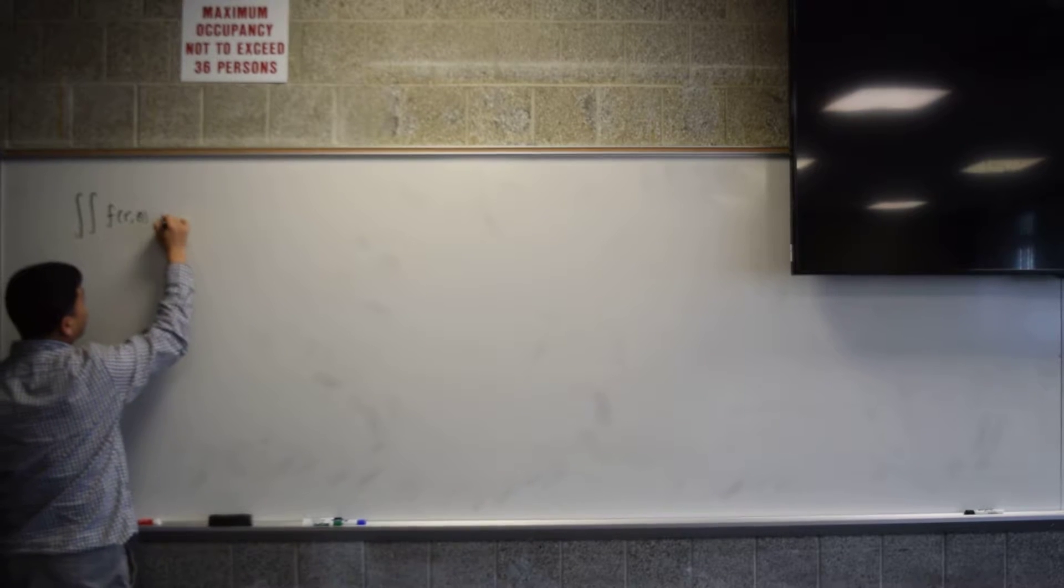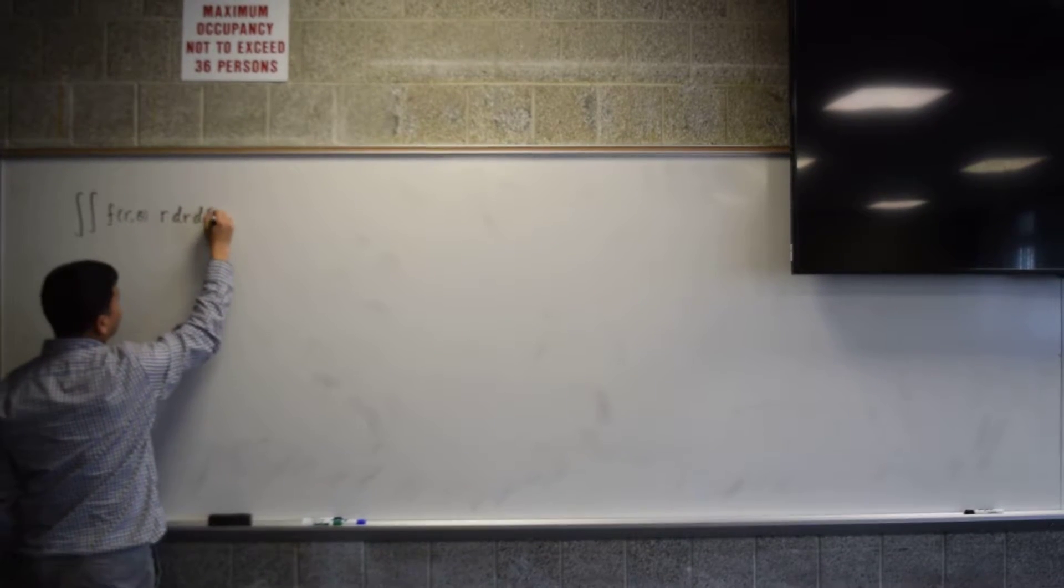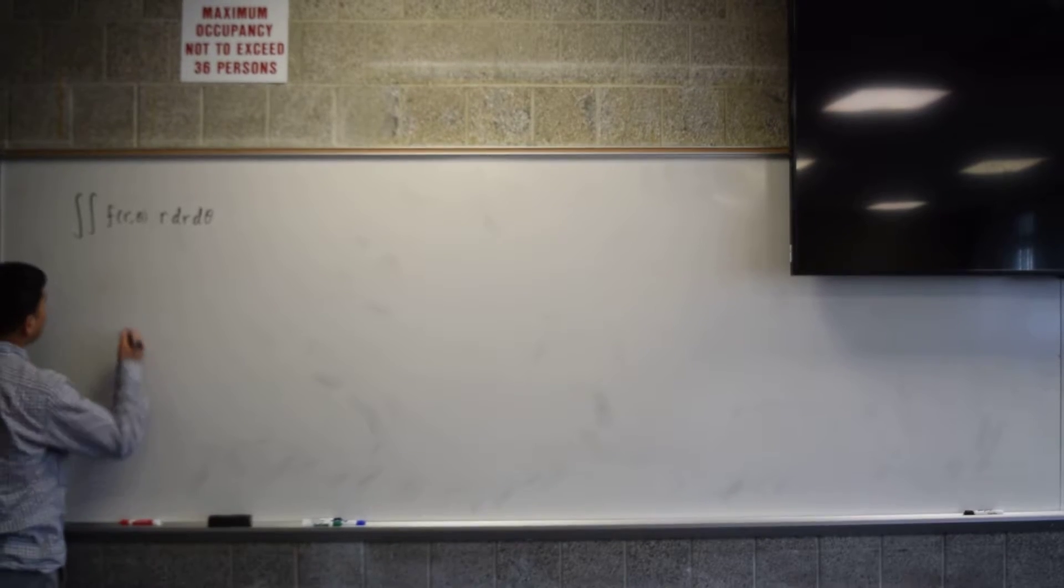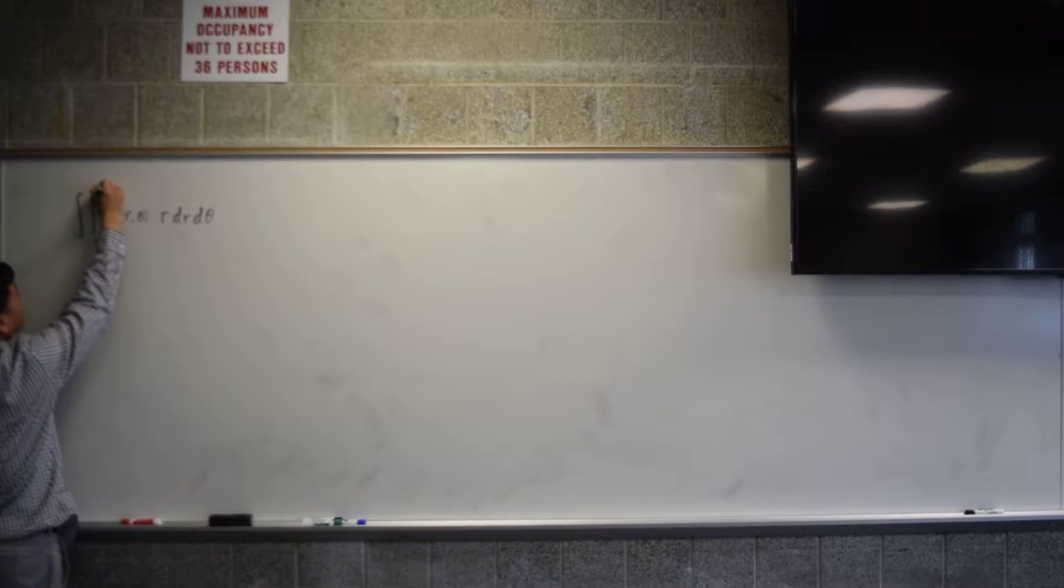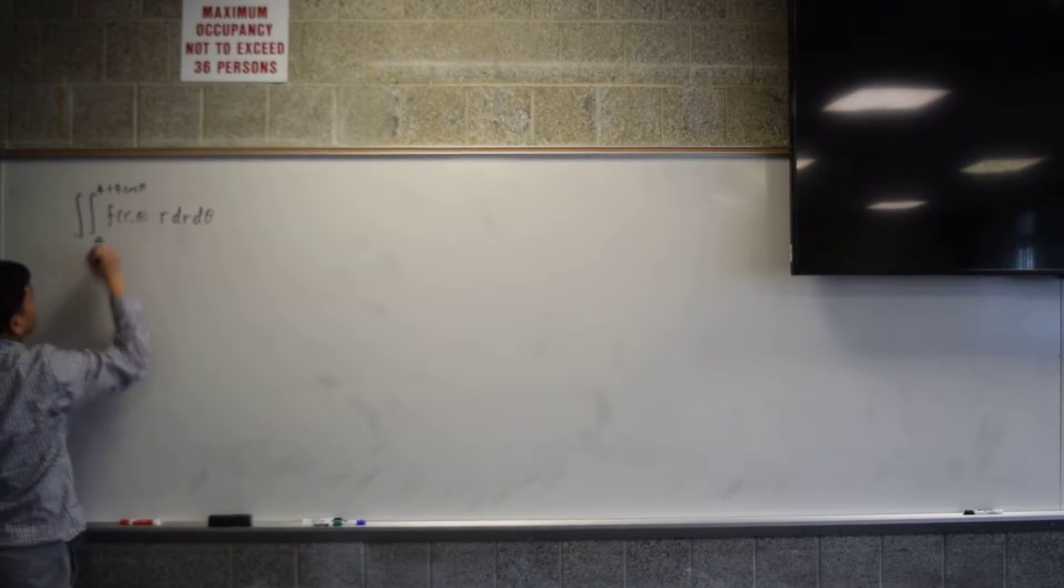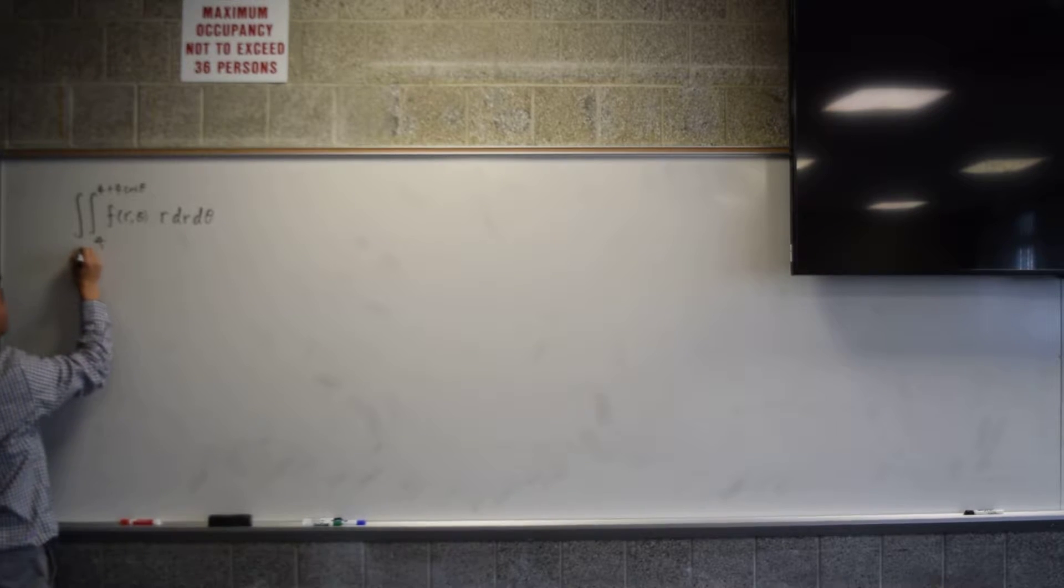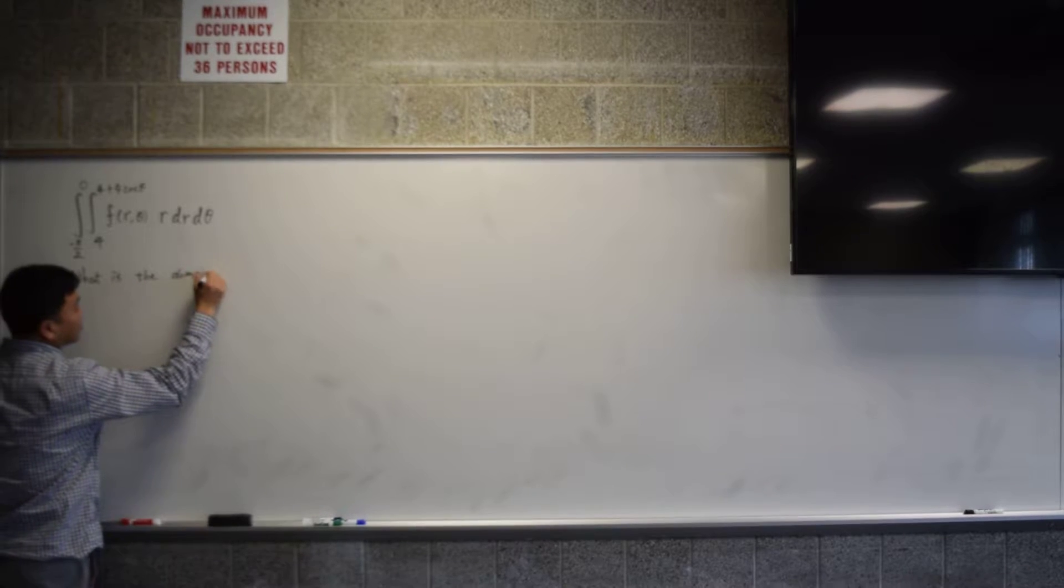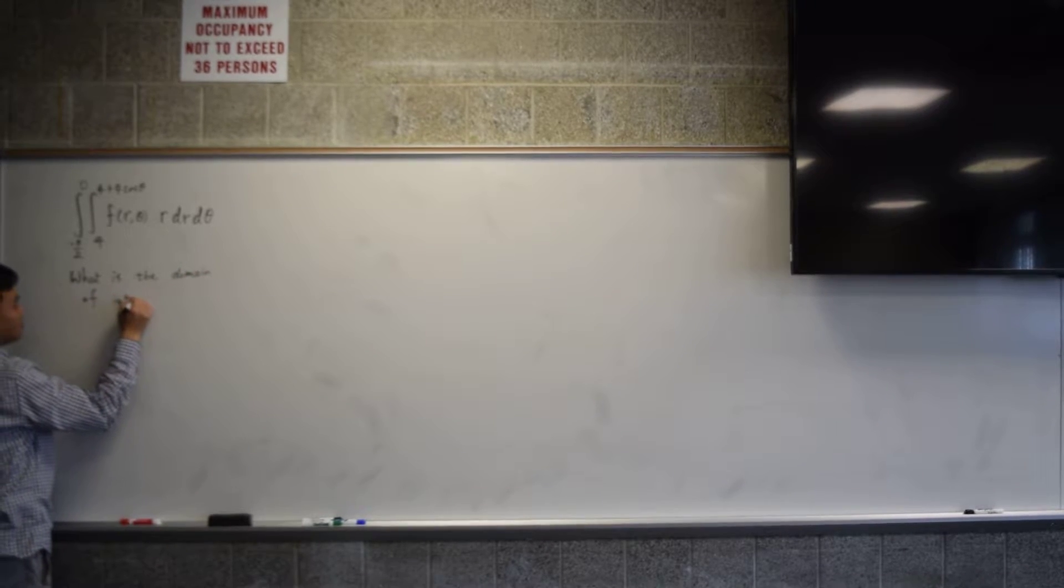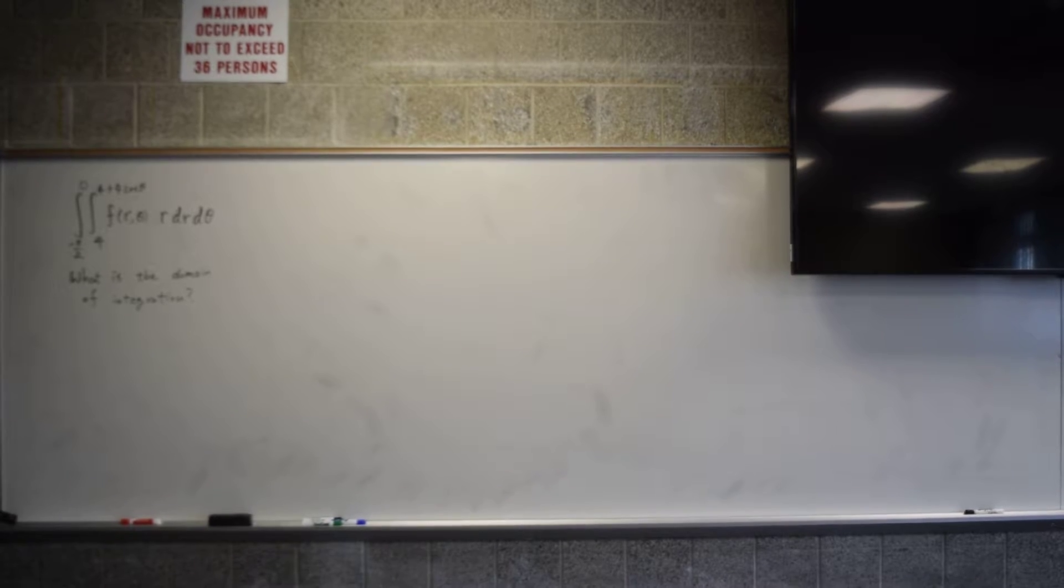I'll write down an integral and you have to figure out what kind of domain is being integrated over. So here's f of r, theta, and let's say r dr d theta. And let's say that you have 4 to 4 plus 4 cosine theta, and then you have the angle from negative pi over 2 to 0. So given this integral, your goal is to figure out the domain of integration. The question is what is the domain of integration? And you'll be asked to sketch it.